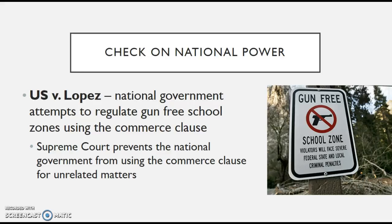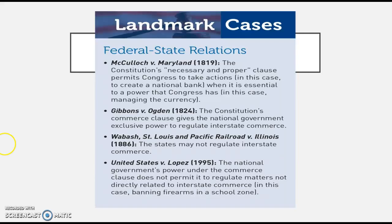This was a major check on the national government as well as a major win for the state government — the states and the national government are always in that metaphoric tug-of-war. McCulloch v. Maryland and Gibbons v. Ogden are definitely major wins for the national government that expand its power; however, U.S. v. Lopez checks that power in 1995 and puts the national government more into its place.